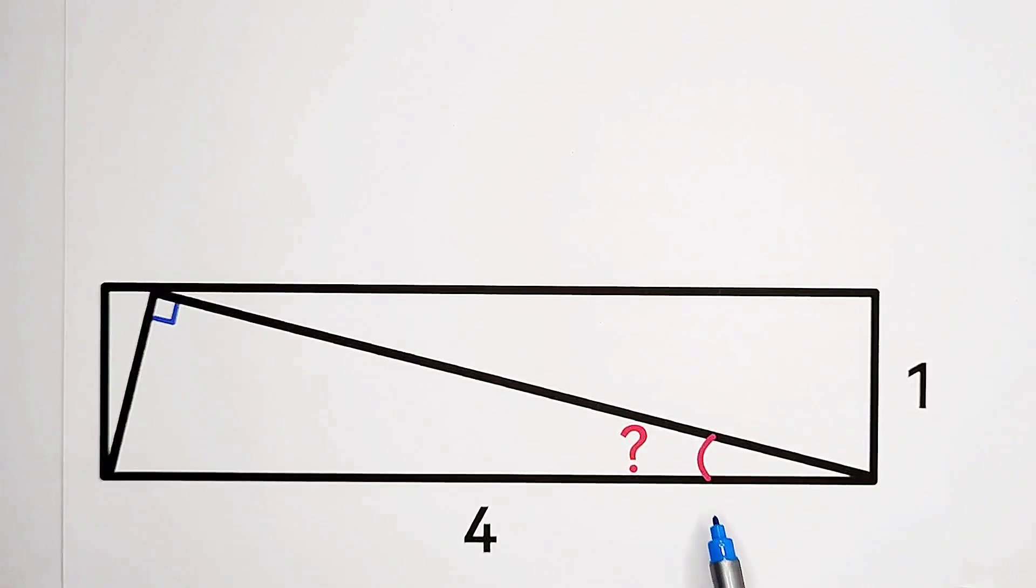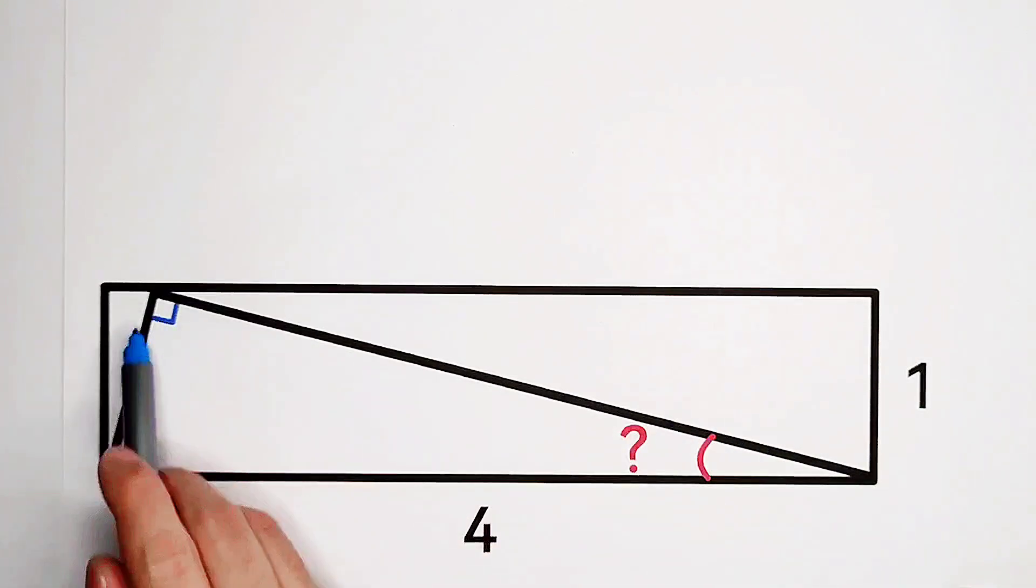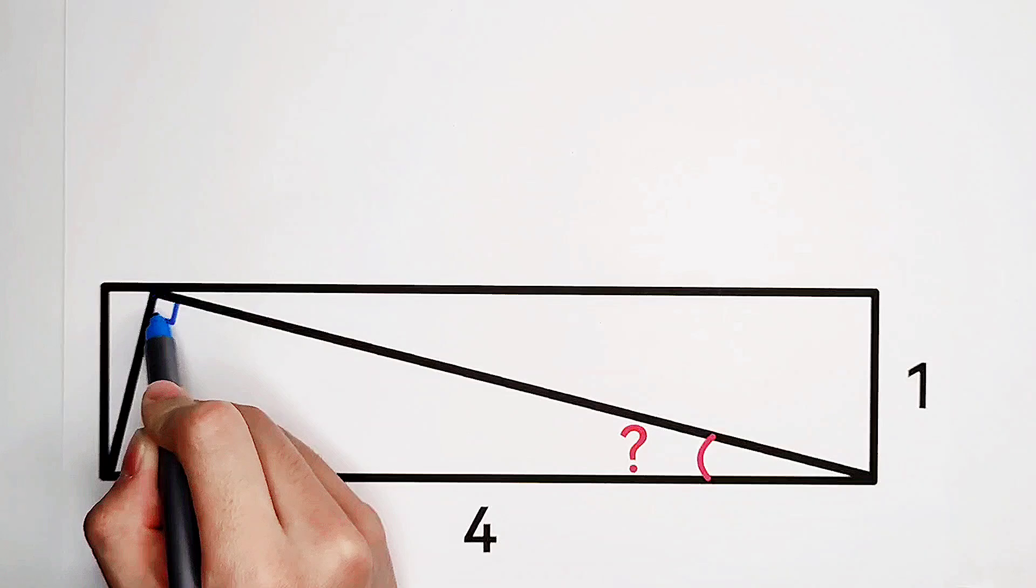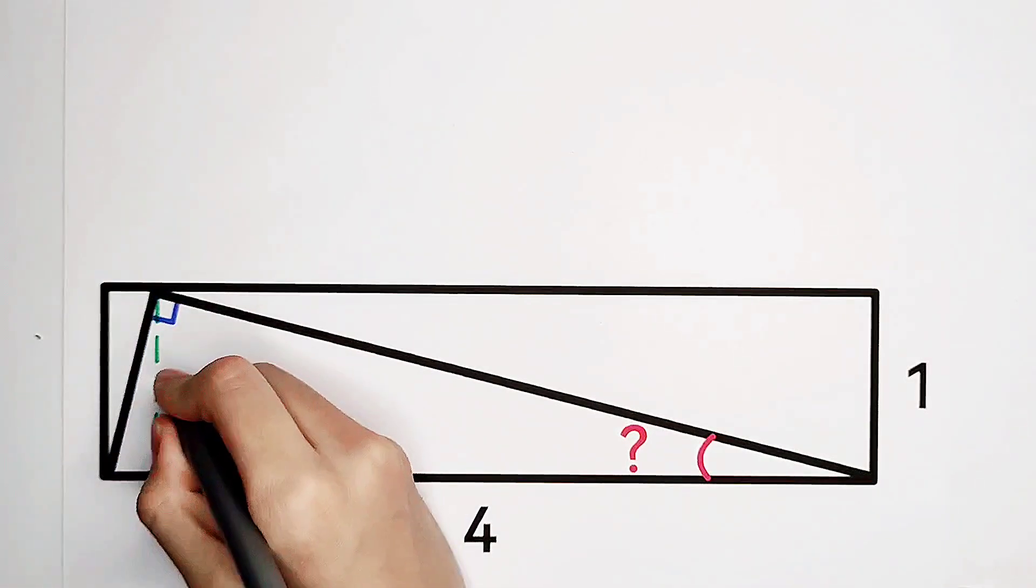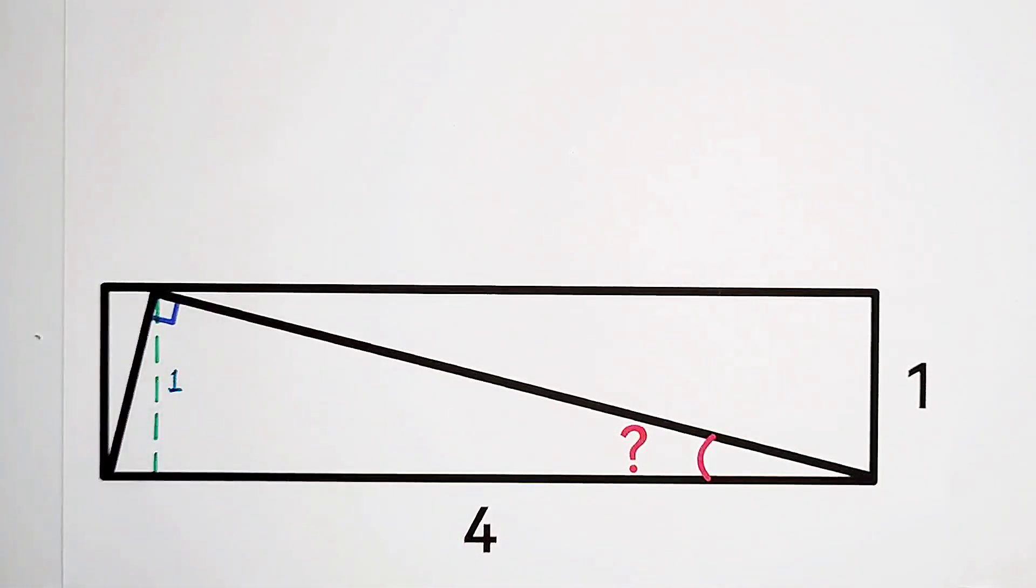Of course, now, the rectangle has a width of 1. So now, I'd like to construct the height of this right triangle from this point. This is, of course, also 1.